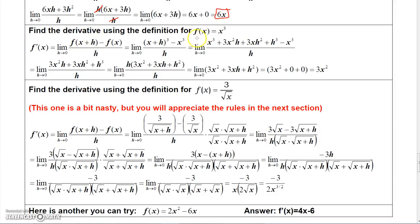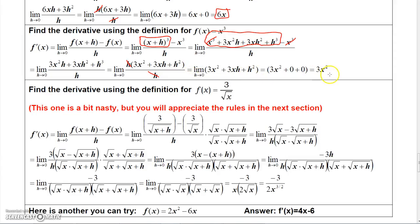I'll let you do this derivative, but let me tell you, you do the same thing — your function is x cubed, so when you replace x with x plus h, you get x plus h quantity cubed, then minus f of x all over h. Do a little research on how to expand a cube and what the coefficients will be. When you expand that cube and subtract the function, the x cubed terms cancel. Factor an h out of the remaining three terms and cancel it with the h in the denominator, then take the limit as h goes to 0, and you'll end up with 3x squared.